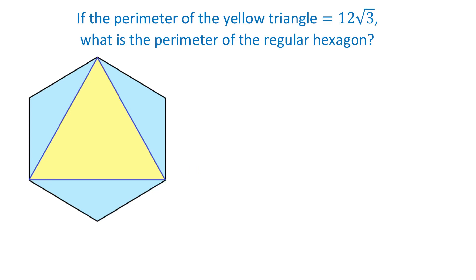Hello, in this figure the perimeter of the yellow triangle is 12 square root of 3 units. Then what is the perimeter of the regular hexagon?